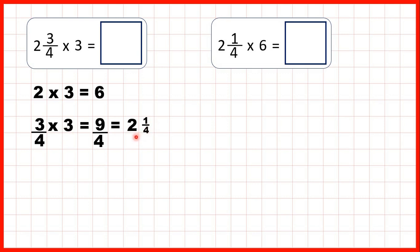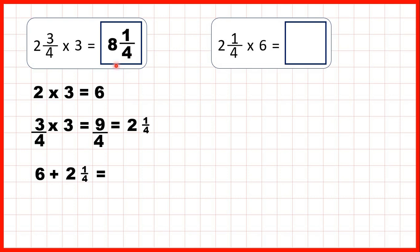So 3 quarters times 3 is 2 and 1 quarter. Now the last step is just to add up our answers. We've multiplied 2 by 3, we've multiplied 3 quarters by 3, so we add 6 and 2 and 1 quarter. 6 plus 2 is 8, and the quarter stays the same, so our answer is 8 and 1 quarter.